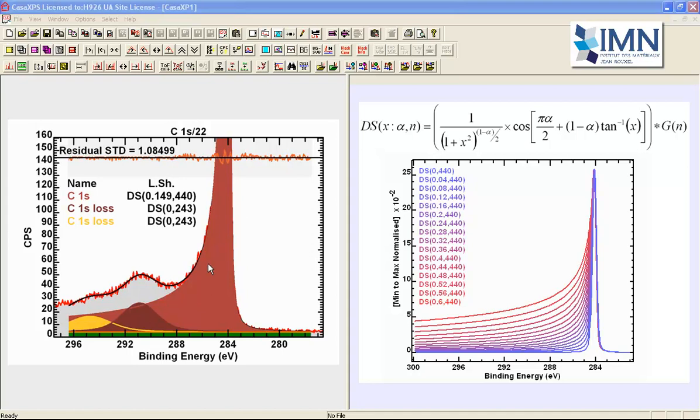This extends further that if we wanted to compare the carbon-1s against an oxygen-1s that is characterized by Voigt functions, then once again we would not be able to measure the amount of oxygen versus the amount of carbon in a graphitic form if we were modeling the carbon using a DS line shape.